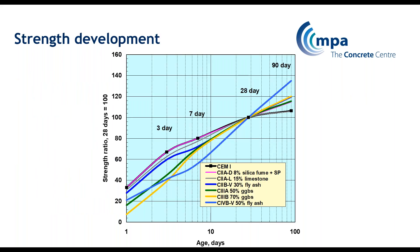This useful graph shows how much strength gain you get over time for concrete made with different types of cement. The fastest setting is CEM1, Portland cement, which doesn't gain a huge amount of additional strength after 28 days — our standard timing for the strength check. Other cement types continue to gain strength after 28 days, potentially up to around 40% more than at 28 days. So you might consider specifying the strength check not at 28 days but at 56 or 90 days, which may be useful for your project.